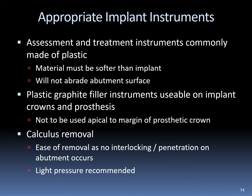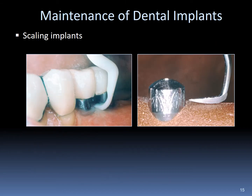Calculus removal is done with ease, as there is no interlocking or penetration into the abutment. Only light pressure during debridement is used. Current research on the use of metal scalers is underway, and we may see a change in their use on dental implants in the near future. At this time, we continue to follow the protocol and use plastic instruments for implant assessment and preventive measures.